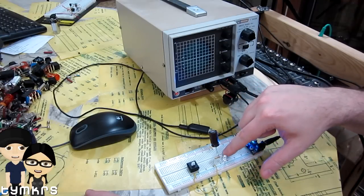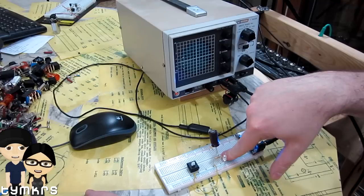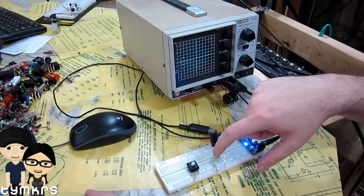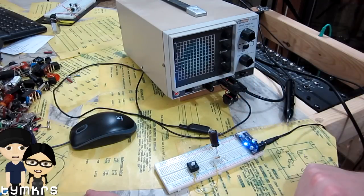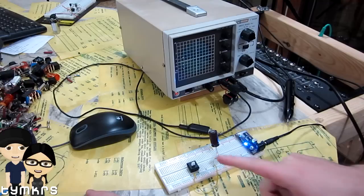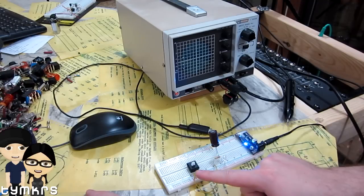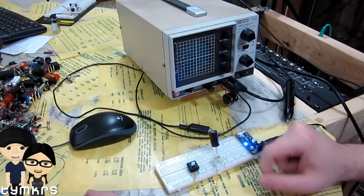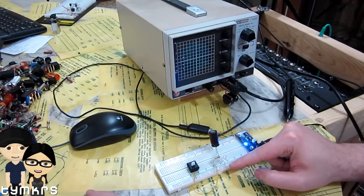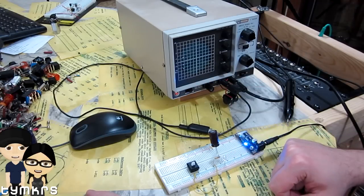This is a low pass filter, so the capacitor is between ground and the output point of our filter, and the resistor is between the input and the output. Basically what happens is you hold down the switch, current flows through the resistor, charges the capacitor, and then exits the filter through the output or load.